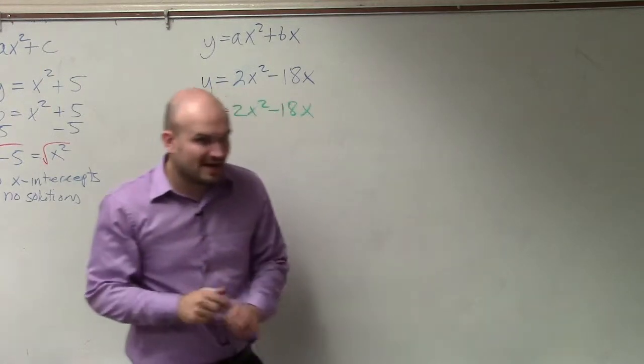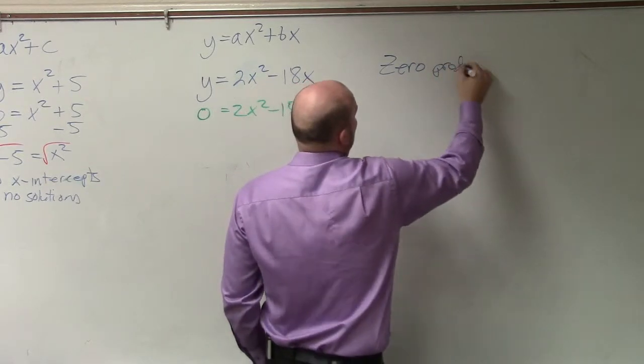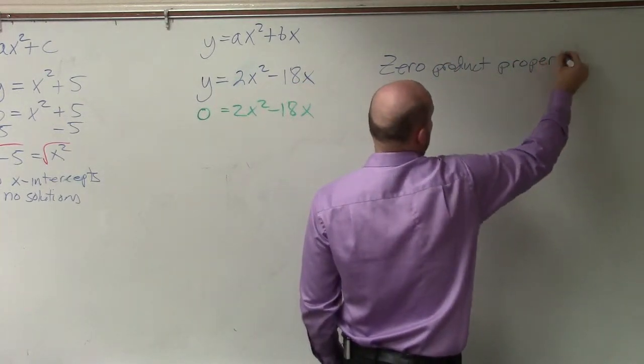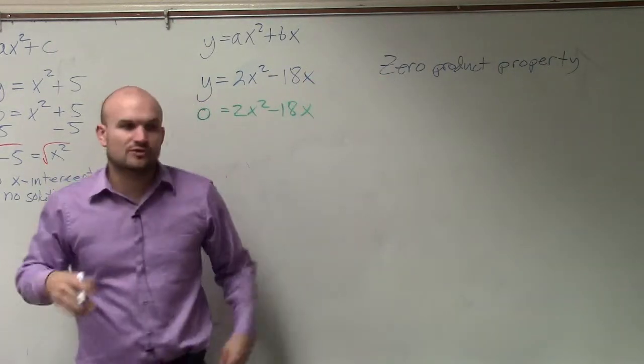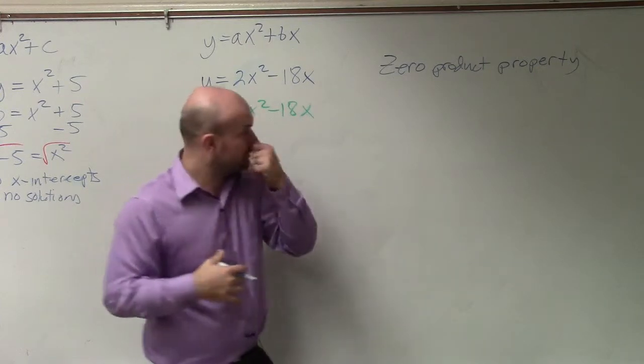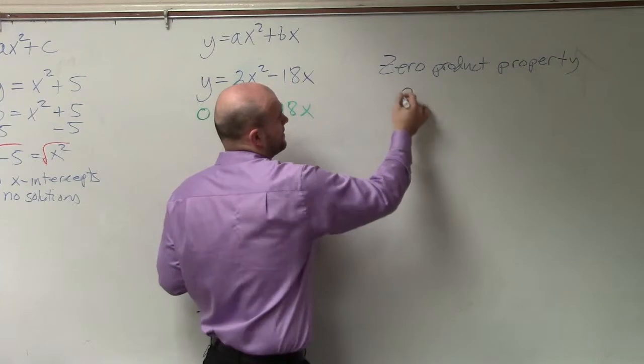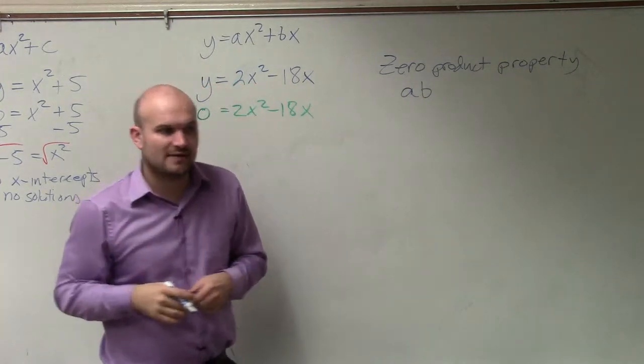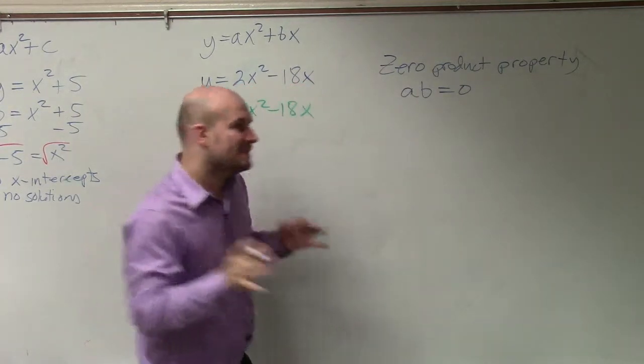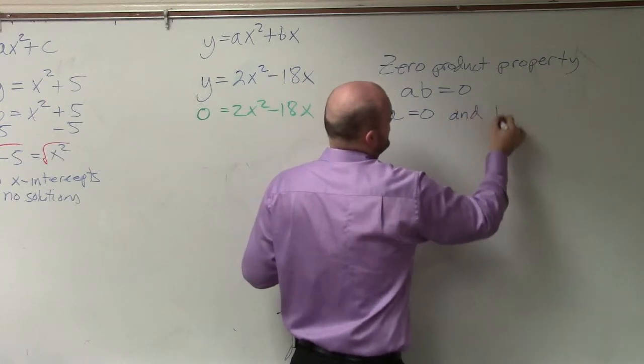So that different way involves a very, very important property, the zero product property. And you're going to want to write this down and keep this with you because for the rest of this chapter, we will be using this property. And the property goes like this. If you have two numbers that are multiplied together and their product is equal to 0, then one or both of the numbers has to equal 0.